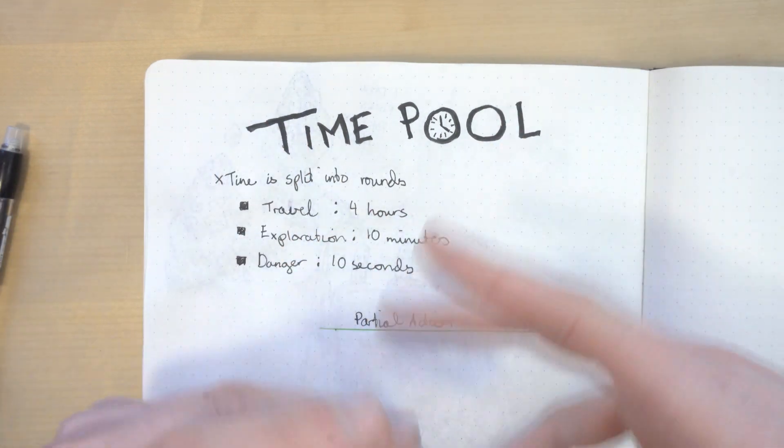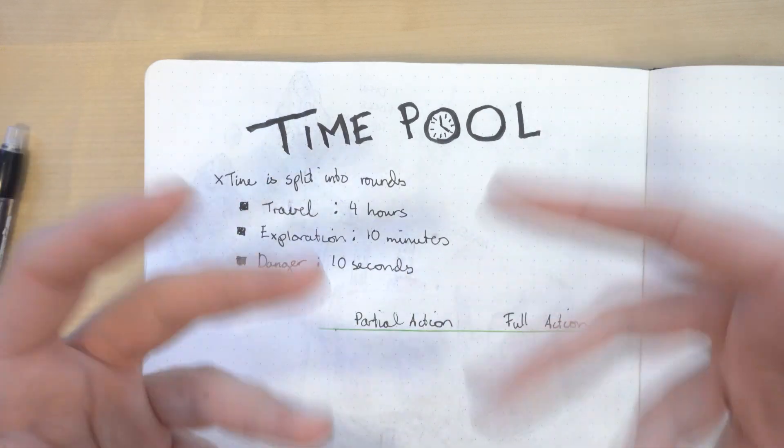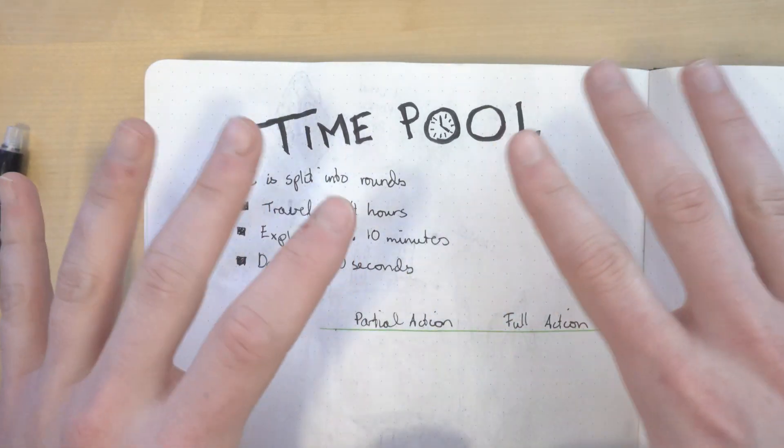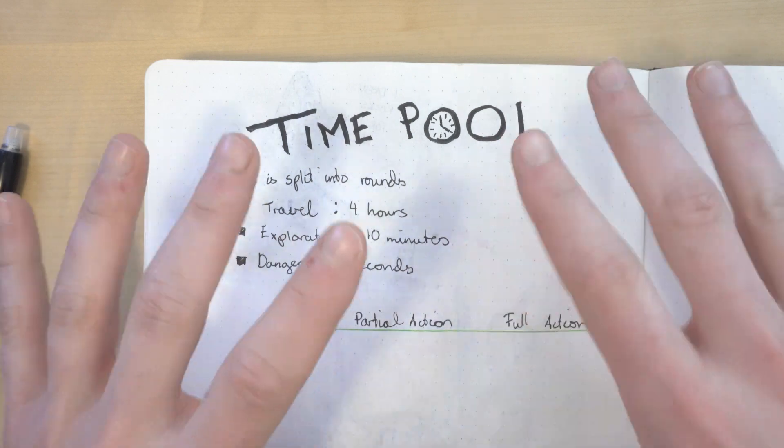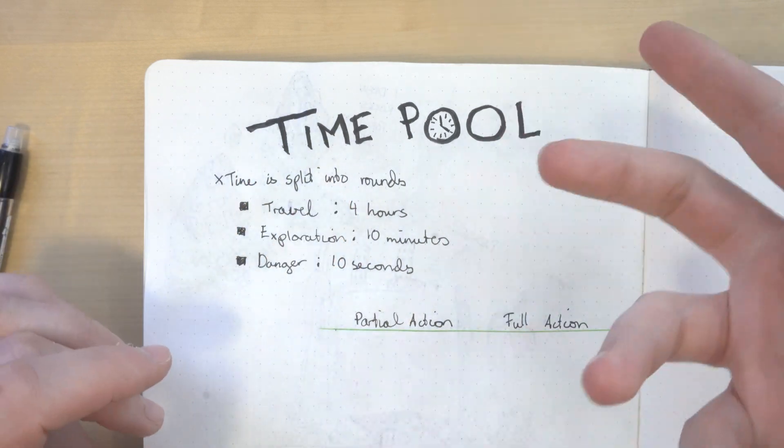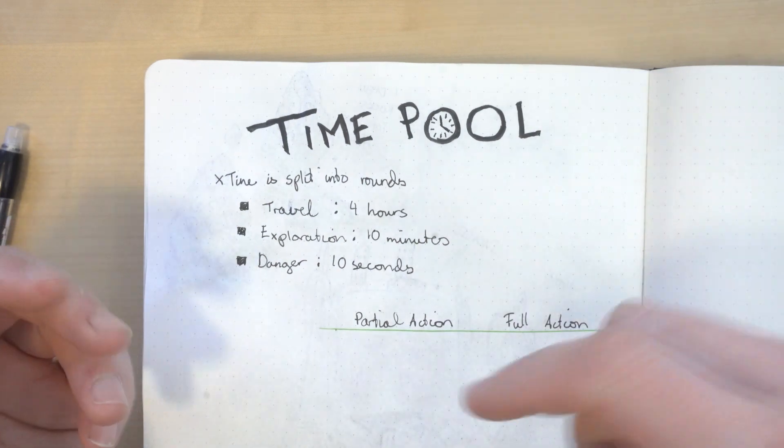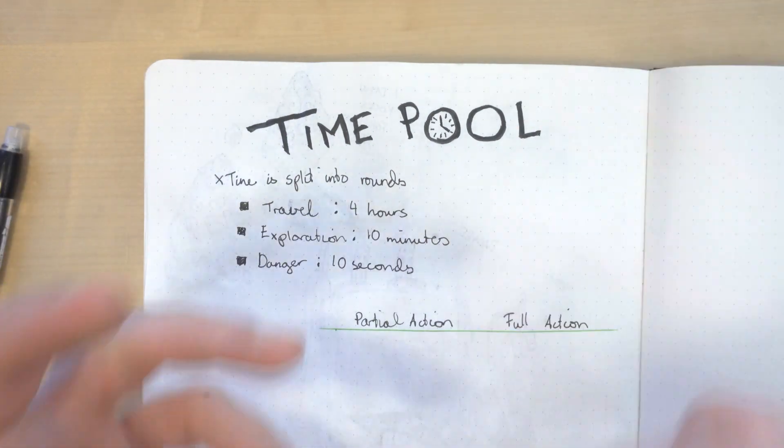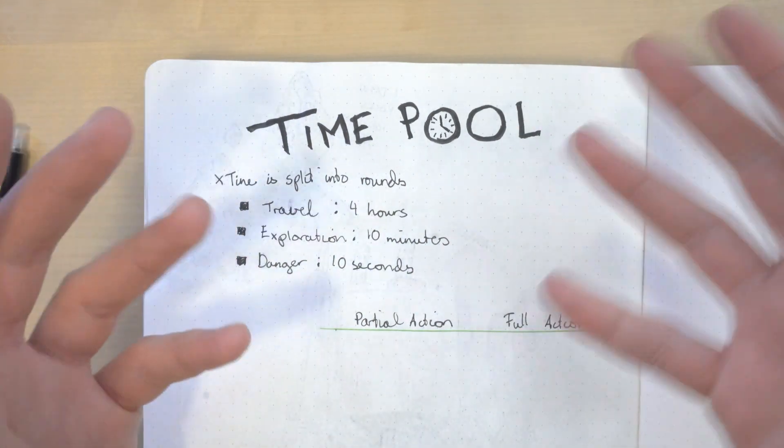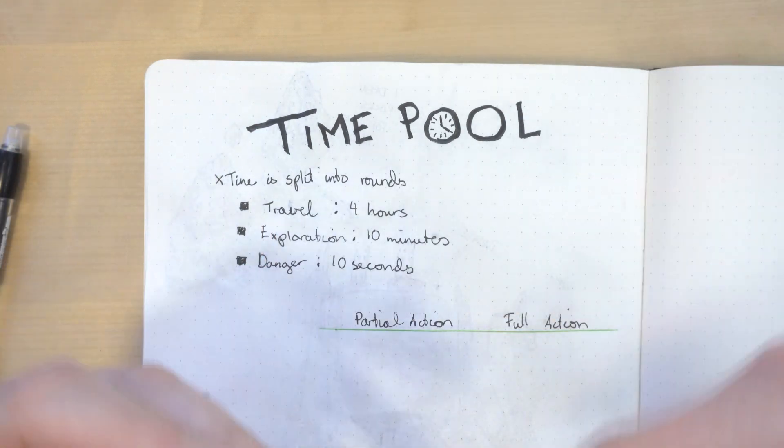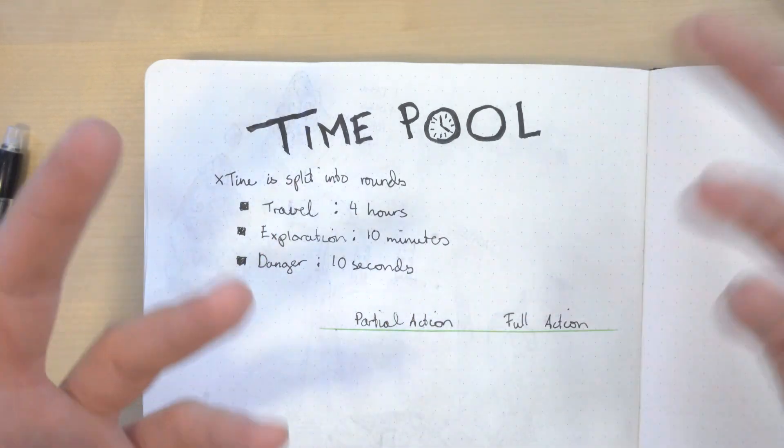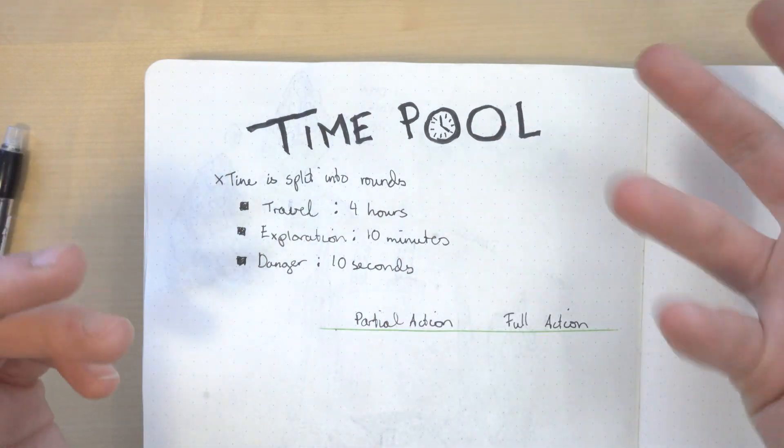Now this may feel like it's clogging the flow of the game by quantifying the time of everything all the characters do, but it honestly doesn't. When I've tried it, players don't have to resolve complicated actions like you do in D&D combat. It's more a mental note where you try to make an estimate on how much time has passed.